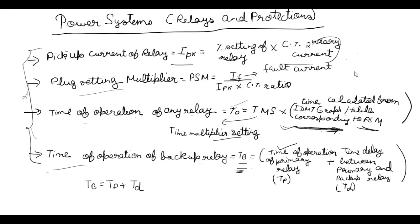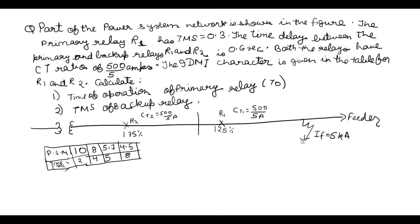which is equal to time of operation of primary relay, TP, plus the delay time, time delay between primary and backup relay. This was the easiest one. So now let's move to the question and learn how to use these formulas. Okay, so this is the question which we are going to do and this will solve all the problems in understanding those formulas. So let's start.